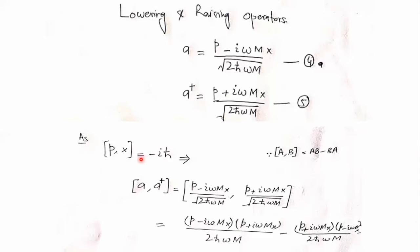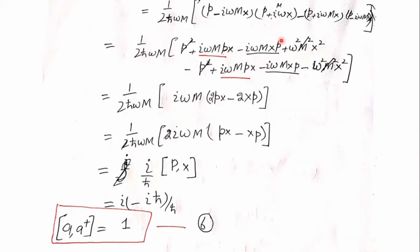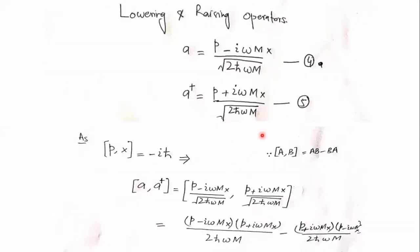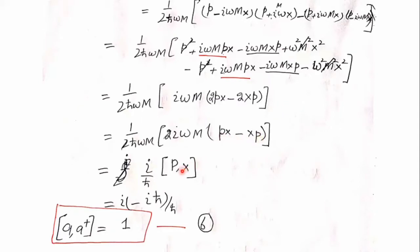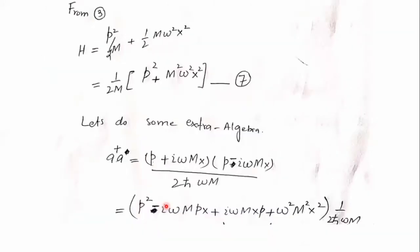So after cancellations, the cross terms px partially cancel with xp. The remaining term is px minus xp, which equals the commutation relation [p, x] = −iħ. After substituting and simplifying — with the minus signs giving plus, and the ħ terms canceling — the result is that the commutator [a, a†] = 1.